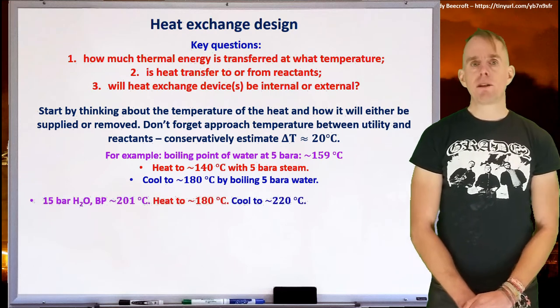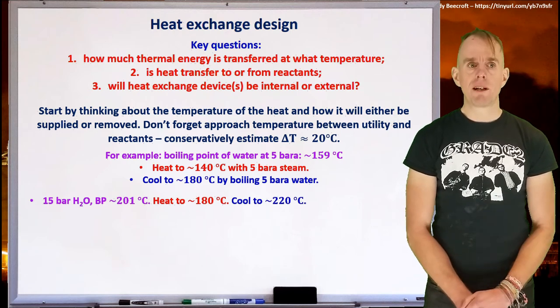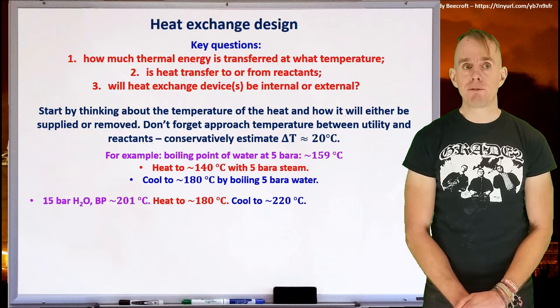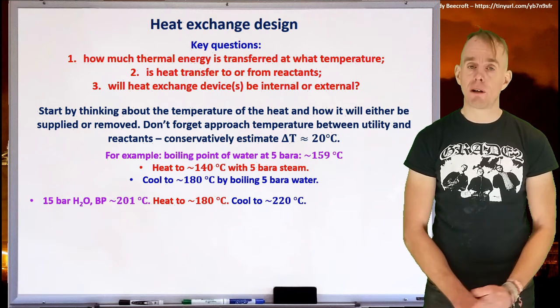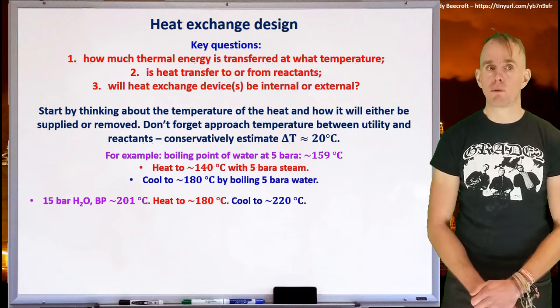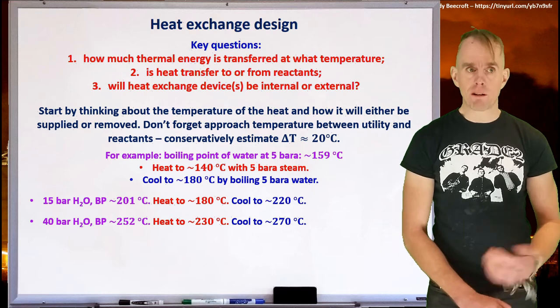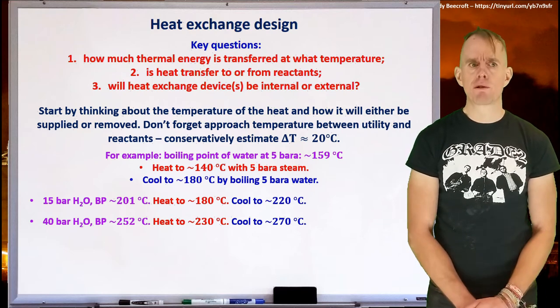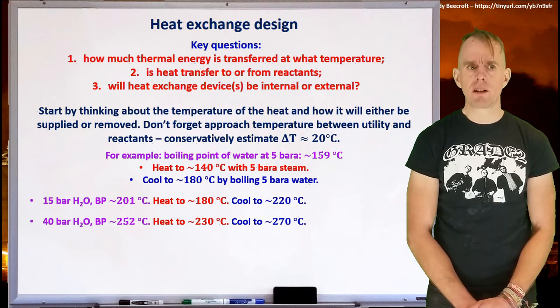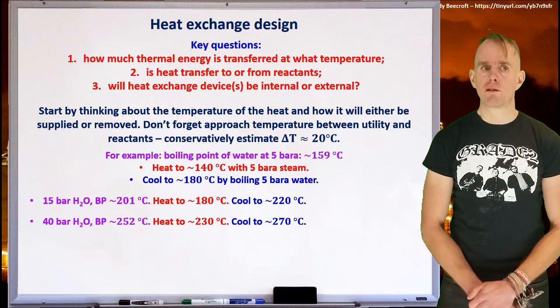In a similar vein, if we think about intermediate pressure steam or intermediate pressure water, you'll find that the boiling point at 15 bar is just a touch over 200 degrees C. So you can heat to 180 or cool to 220. Likewise, for high pressure steam, typically 40 bar or thereabouts, the boiling point of water at 40 bar is 252 degrees C. So you can heat to 230 or cool to 270.